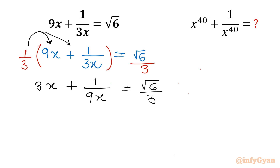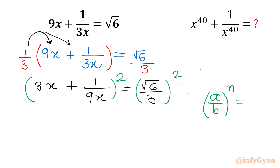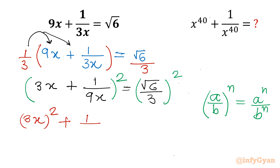Now I will consider squaring both sides — so let us write whole square on both sides. For the right hand side I will use the property: a over b whole power n equals a power n over b power n. For the left hand side, using the a plus b whole square formula: I will write 3x whole square, plus 1 over 9x whole square, plus 2 times 3x times 1 over 9x.